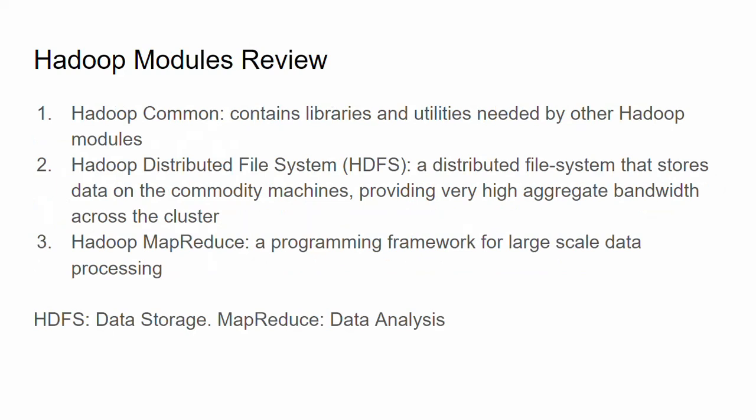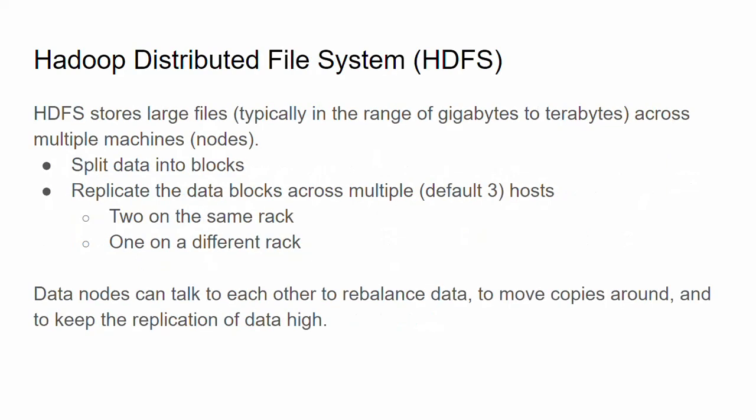There are three components in Hadoop: Hadoop Common, which contains the libraries and utilities needed by other Hadoop modules; HDFS, the distributed file system that stores data on commodity machines; and Hadoop MapReduce, which is essentially the compute layer. HDFS stores large files across multiple machines by splitting data into blocks and replicating those data blocks across multiple hosts. Data nodes talk to each other to rebalance data, move copies around, and keep replication high. The key is that HDFS can organize and store files and make them available for further processing.